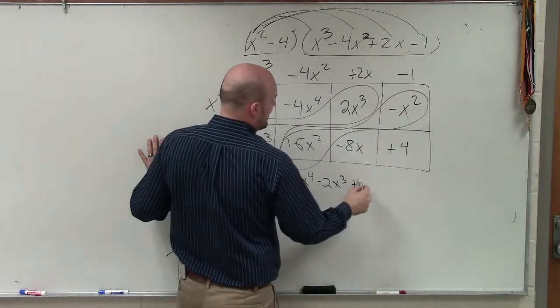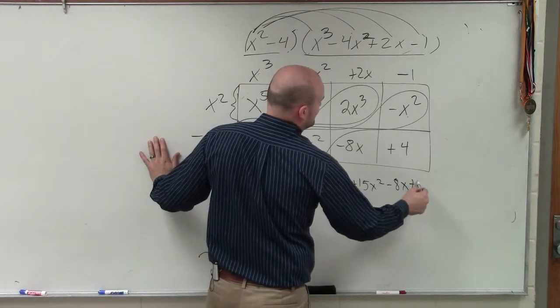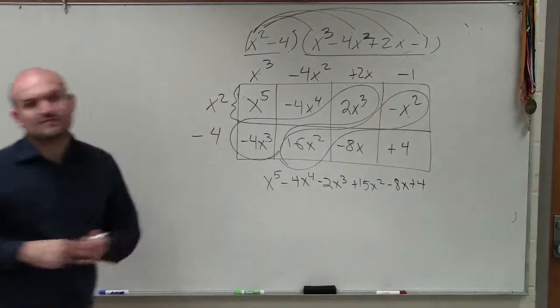Combine these two to give you a positive 15x squared. And then minus 8x plus 4. And that is your final answer.